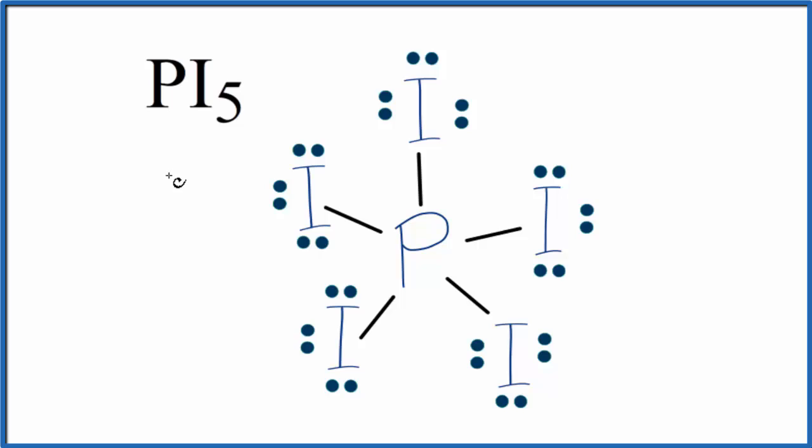Then we'll look at the molecular geometry and bond angles for PI5. Phosphorus is in group 15, sometimes called 5A, and has 5 valence electrons. Iodine is in group 17 and has 7. We have 5 iodine atoms: 5 plus 35 equals 40 total valence electrons for the PI5 Lewis structure.